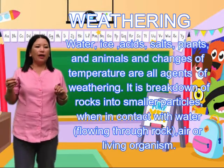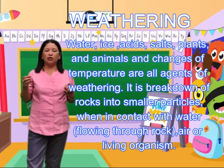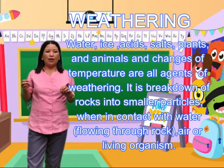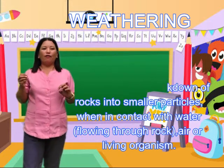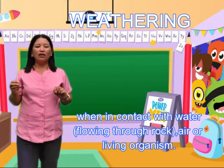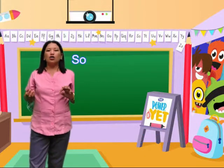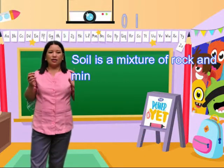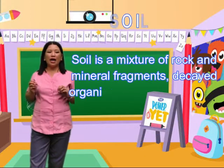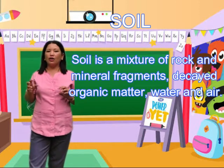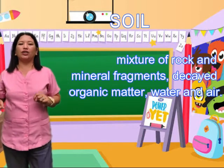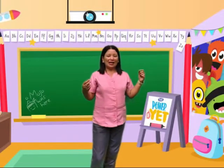Weathering is the breakdown of rocks into small particles through contact with water flowing through rock or living organisms. Soil is a mixture of rock and mineral fragments, decayed organic matter, water, and air. To learn more about weathering, let's watch this video.